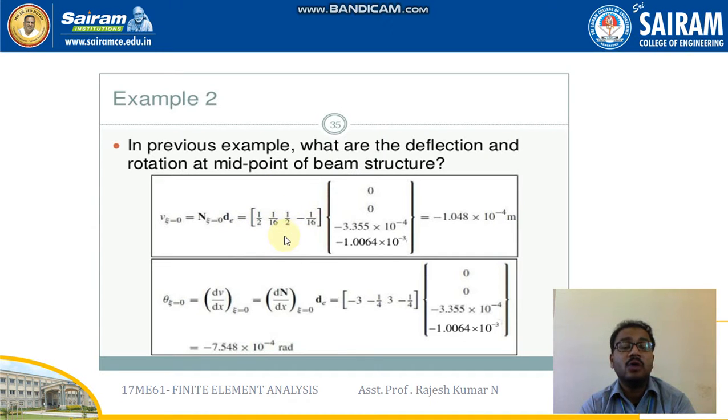The shape function equation for this condition is 1 by 2, 1 by 16, 1 by 2, minus 1 by 16. We know that eta which tends from minus 1 to plus 1, so the origin will be 0 and the vector for the midpoint I will be finding out. First v1 theta 1, 0, 0, I know what is v2 theta 2, that I will be writing here.